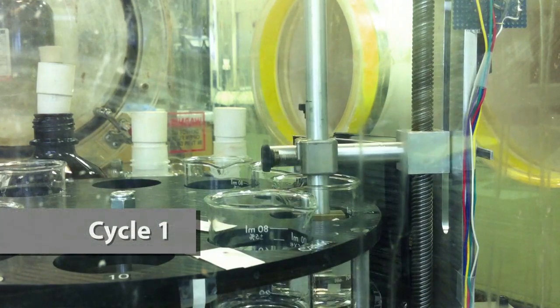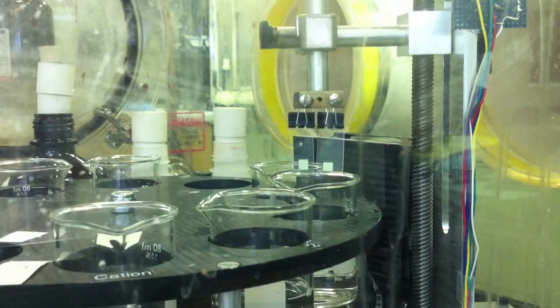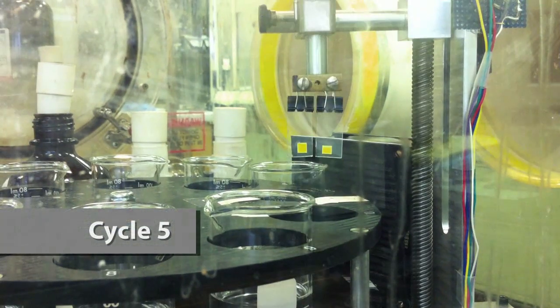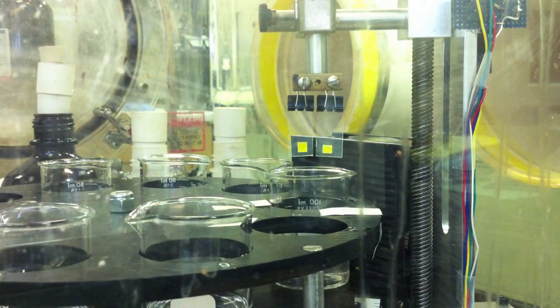During the first cycle of SILAR, we can see the white, unsensitized electrodes. And after five cycles, we can see the characteristic yellow color of cadmium sulfide.